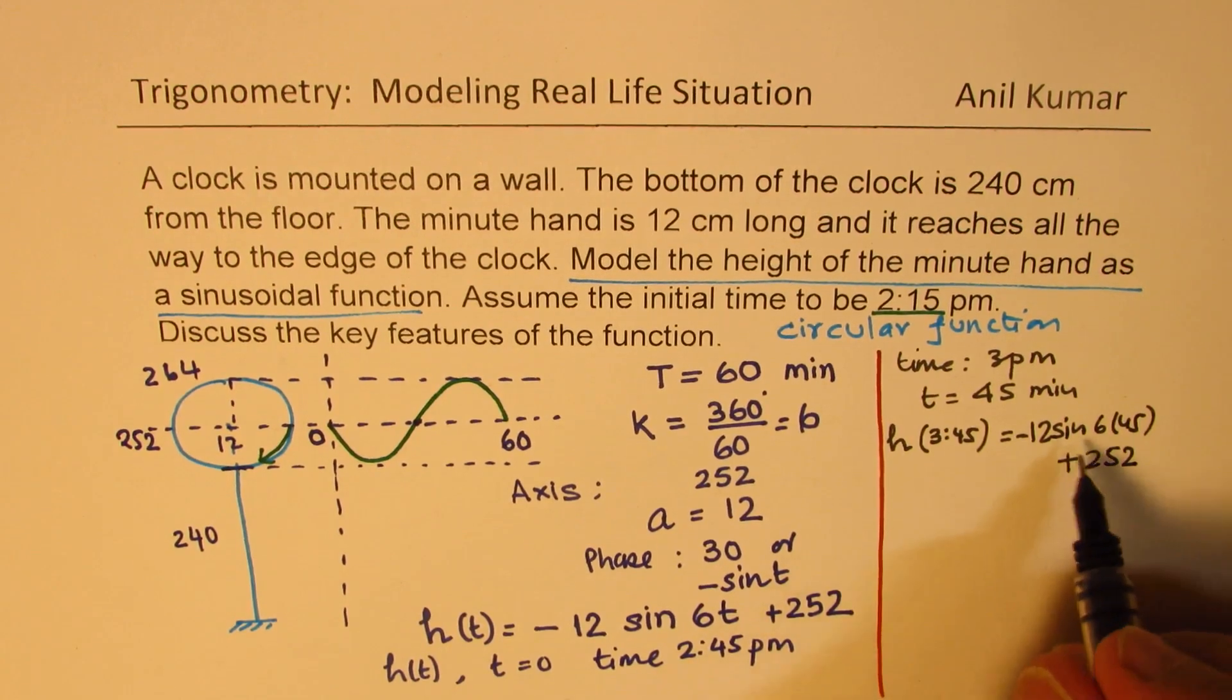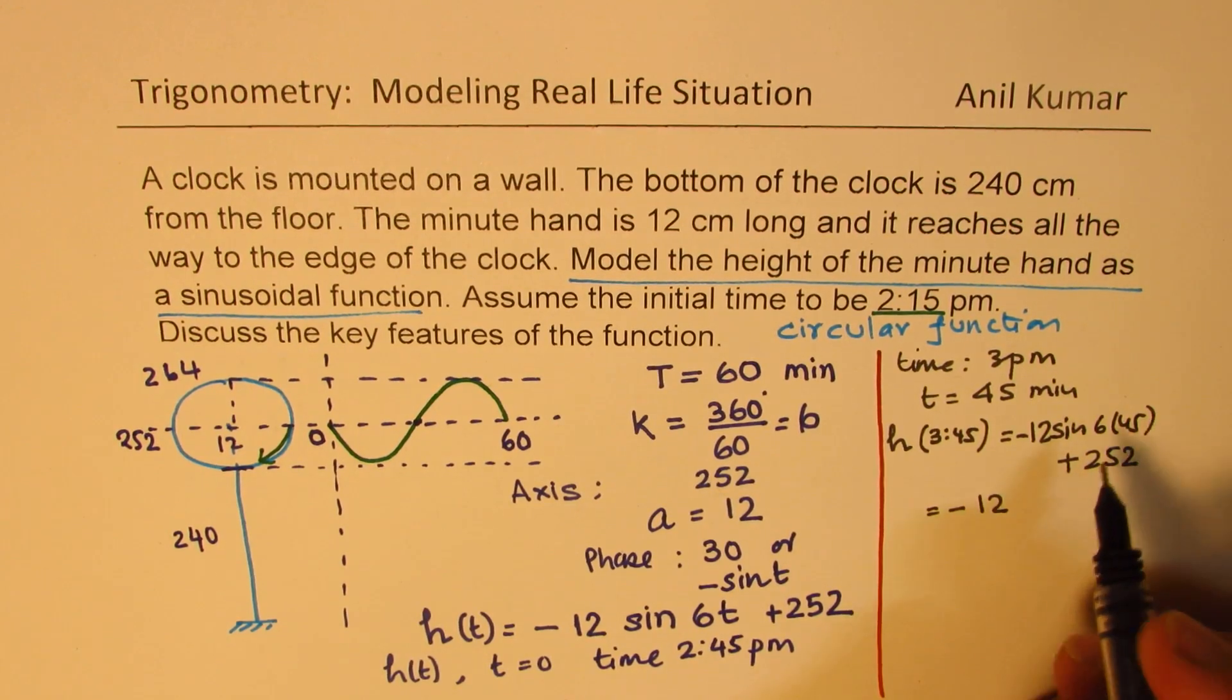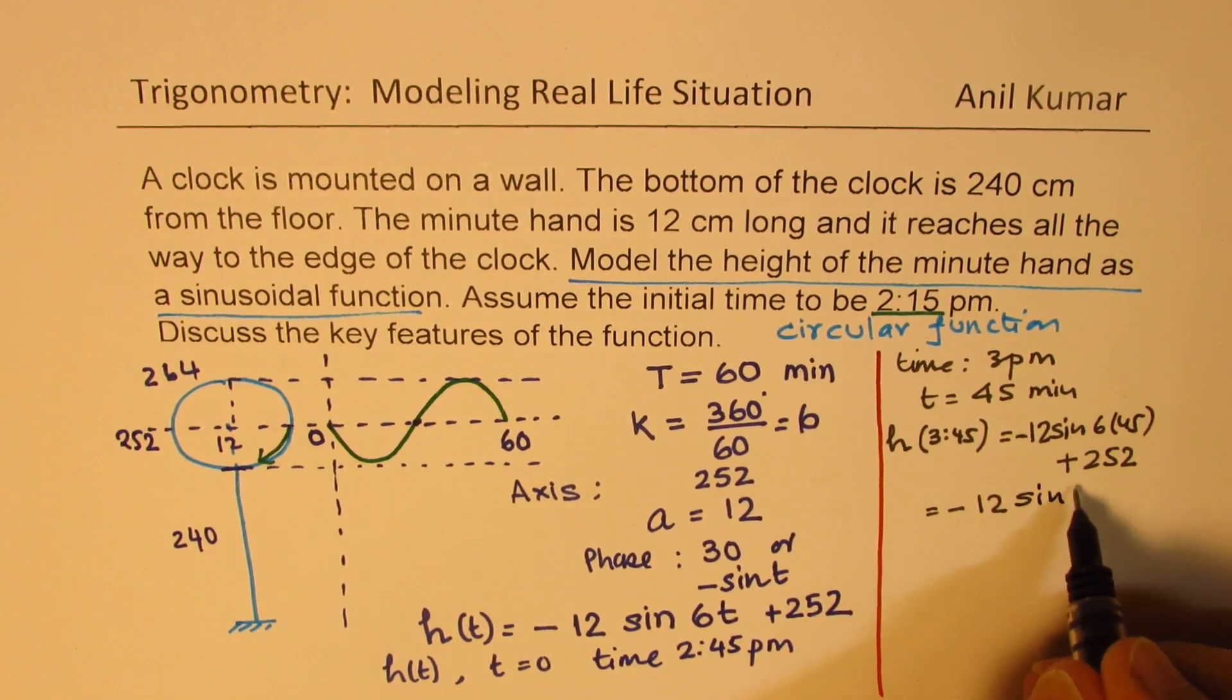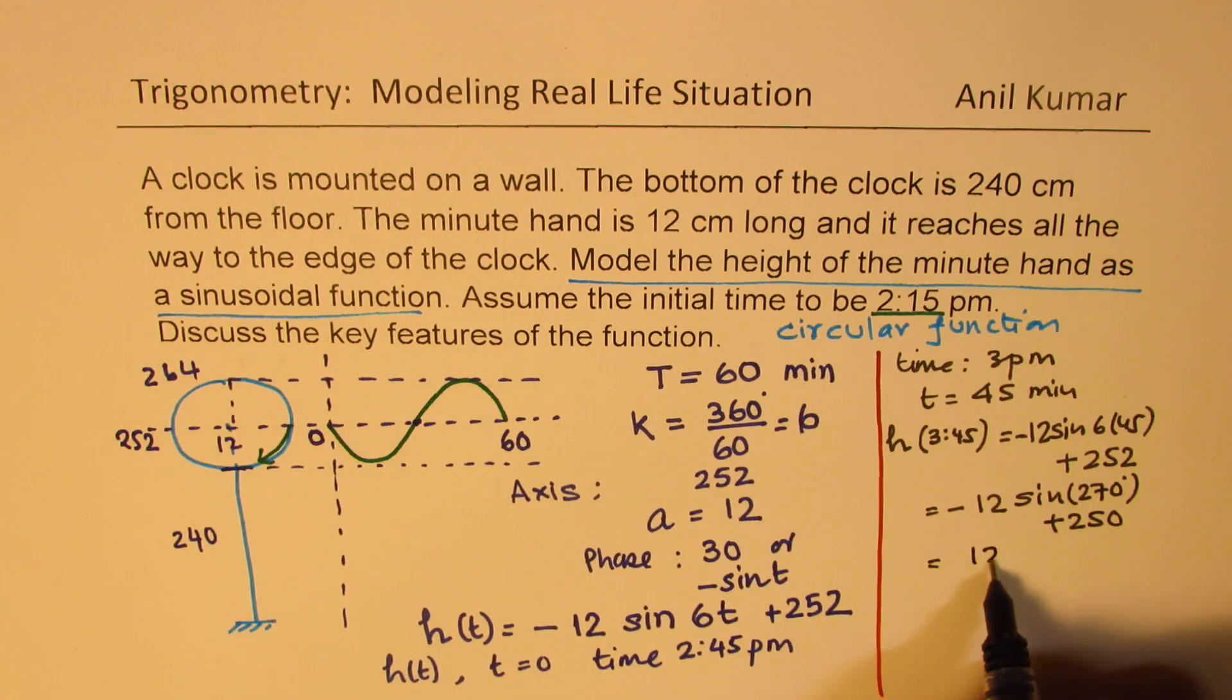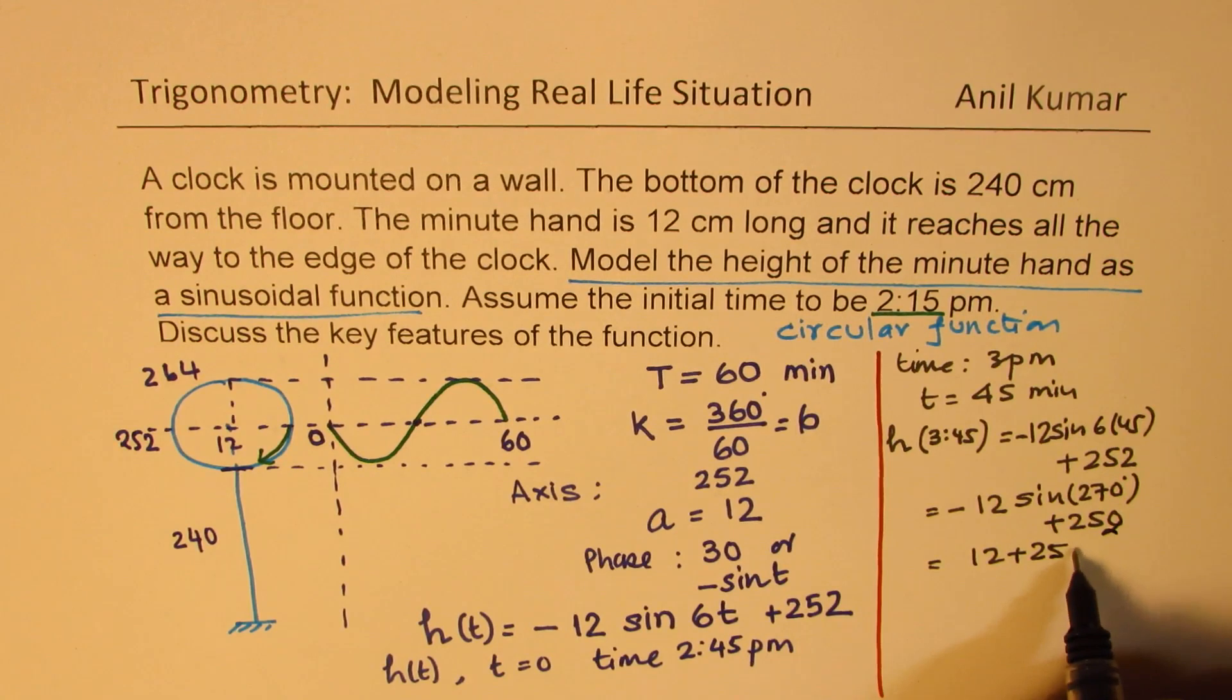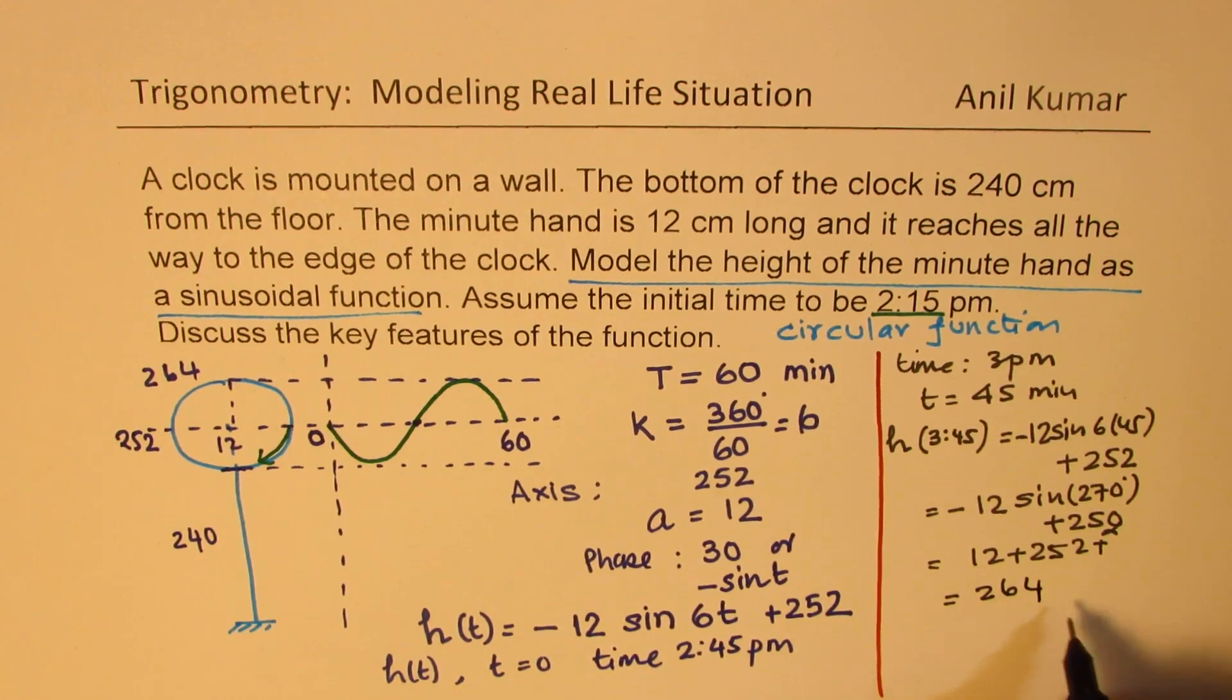We'll substitute here this value of 45. So, minus 12 times... 6 times 45 is 270. So, minus 12 sine of 270 degrees plus 252. Now, sine of 270 is minus 1. So, you get 12 plus 252, which definitely is the maximum, which is equal to 264. So, we have verified with one particular time that it really works.